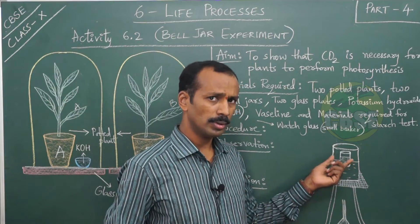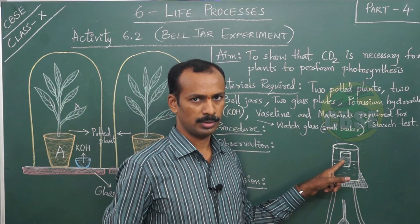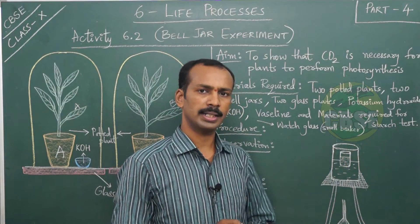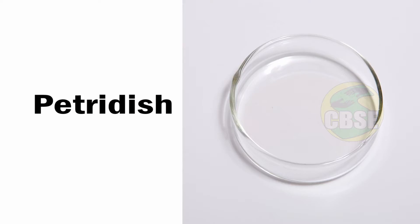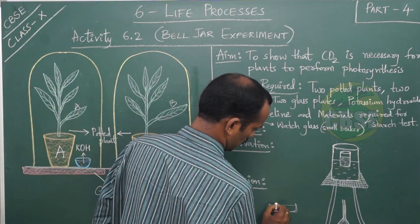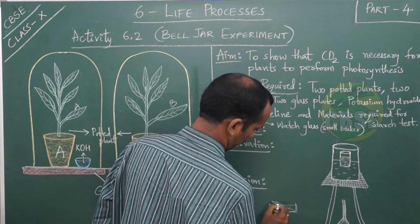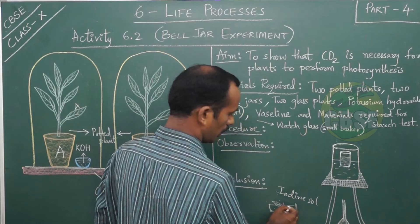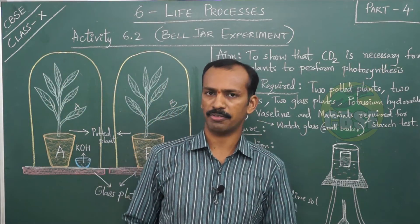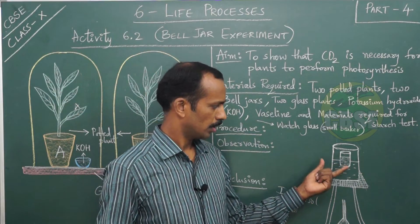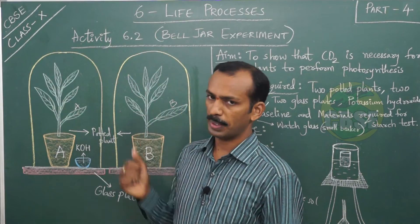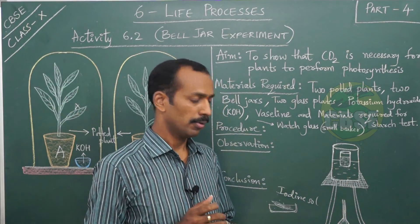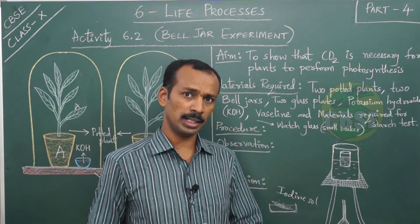You have to boil leaf A in the alcohol first, then place it in a petri dish and dip it in iodine solution. In the same way, test leaf B from plant B. Observe whether a color change occurs or not — a change may or may not occur, but just observe.